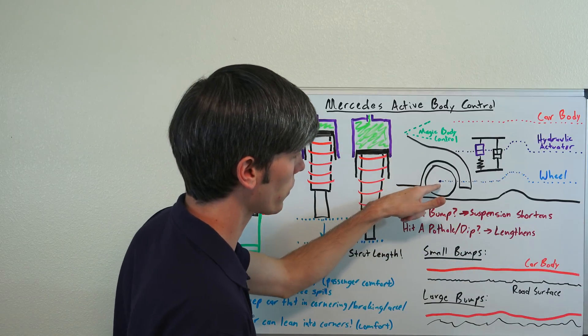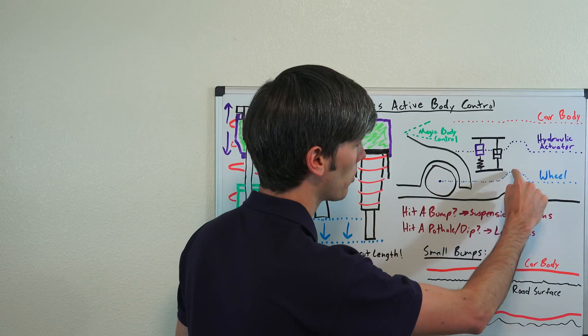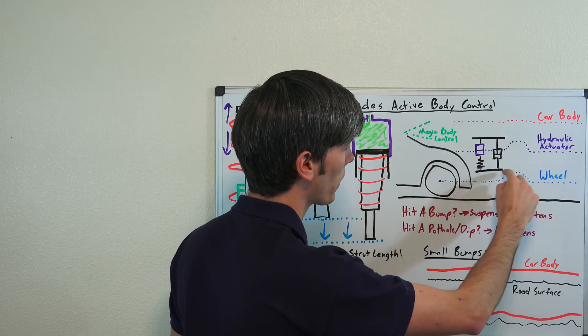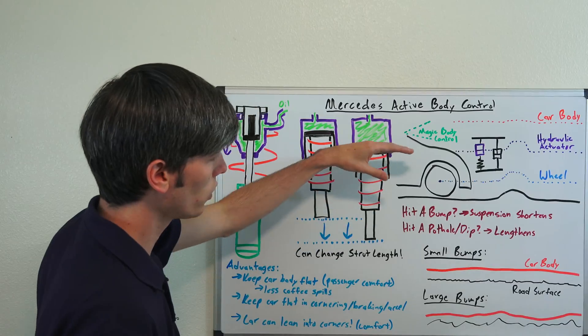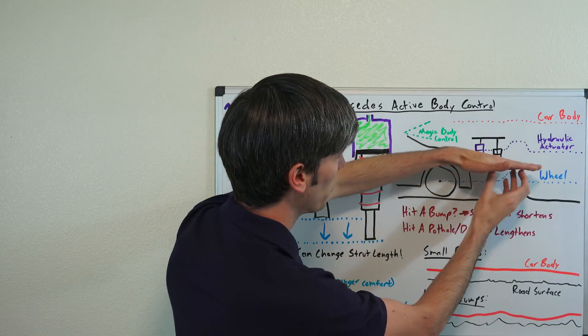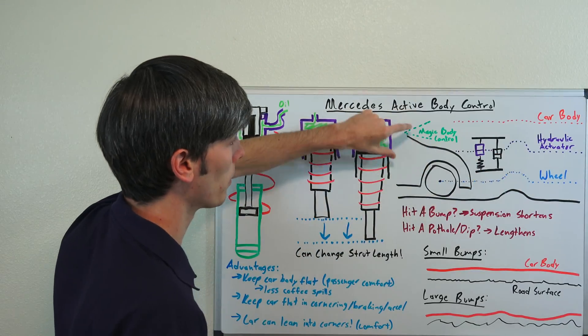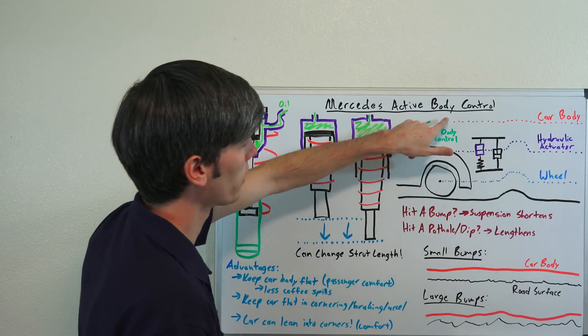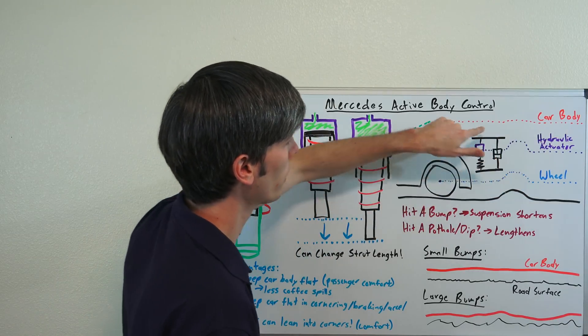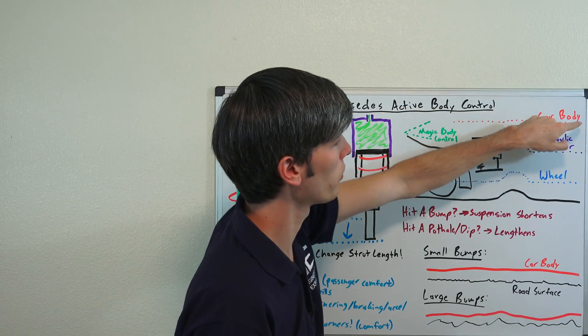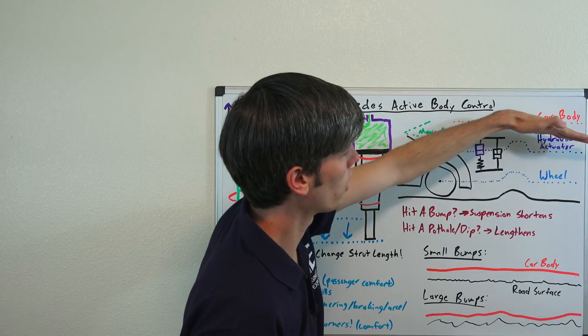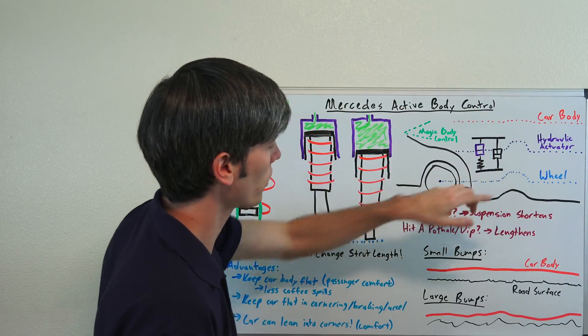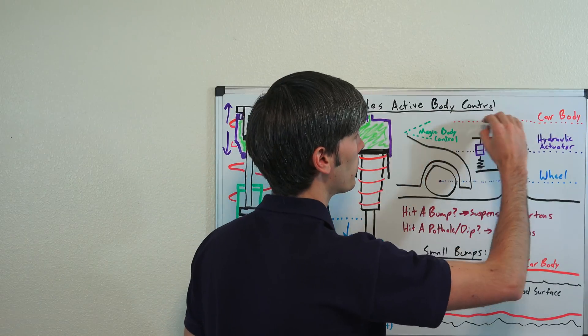Here we have an example where we've got a bump coming up in the road. The wheel has no choice, the center of the wheel has to go over that bump. The hydraulic actuator is going to shorten the suspension. The wheel will come up, but the body won't really move all that much. The body of the car is going to just follow this nice almost flat line, going to be much smoother than if you just had a traditional suspension.